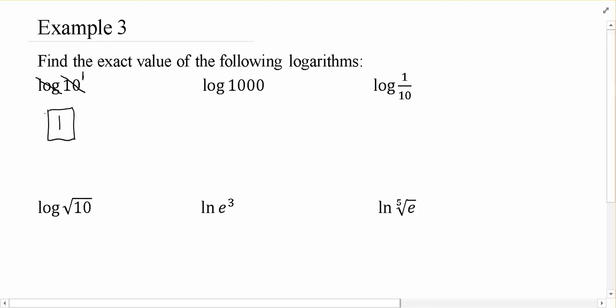If I want to take common log of 1,000, I want to rewrite this as 10 to a power. Remember that when it comes to 1s followed by a bunch of 0s, it's 10 raised to the power of however many 0s you got. So 1,000 would be 10 to the third power. Then the common log and the 10 to a power undo one another and leave us with just 3.